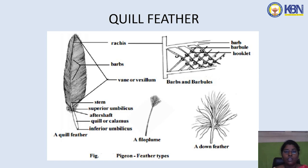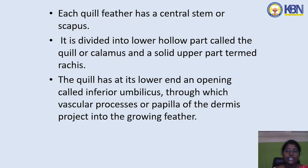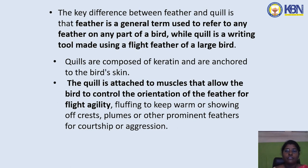Each quill feather has a central stem or scapus, divided into a lower hollow part called the quill or calamus, and a solid upper part termed the rachis. The quill has its lower end opening called the inferior umbilicus, through which a vascular process or papilla of the dermis projects into the growing feather.